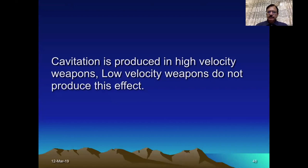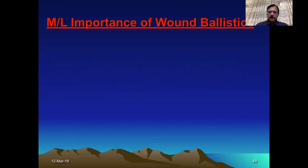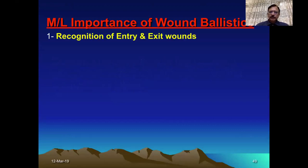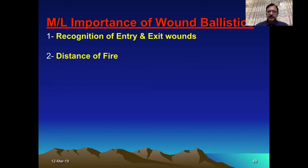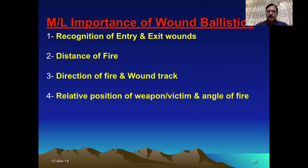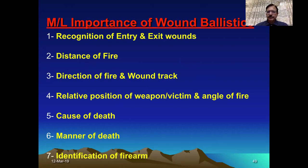The cavitational effect is produced by high velocity weapons; low velocity weapons do not produce these cavitational effects. The medical-legal importance of wound ballistics is that when we study the weapon or wound, it helps in recognizing the entry and exit wound, assessing the direction of fire, the distance of fire, and the relative position of the victim and angle of fire. The cause of death, manner of death, and identification of the firearm can also be determined.